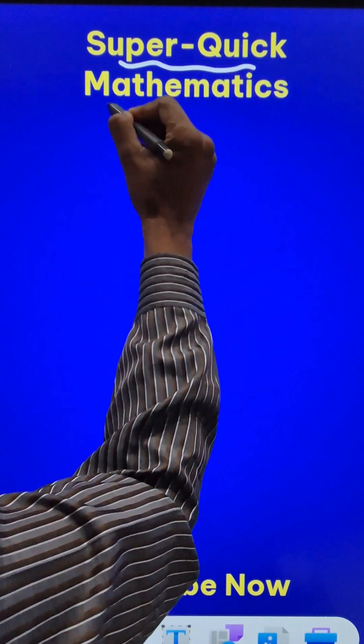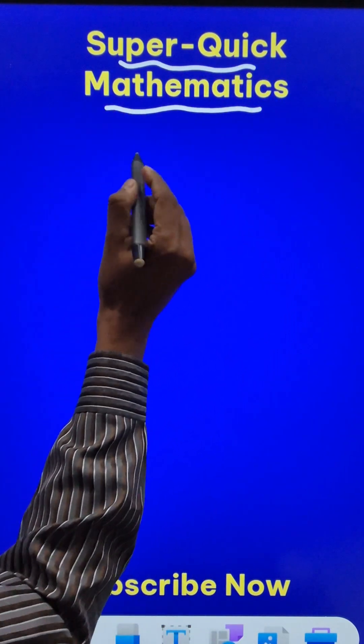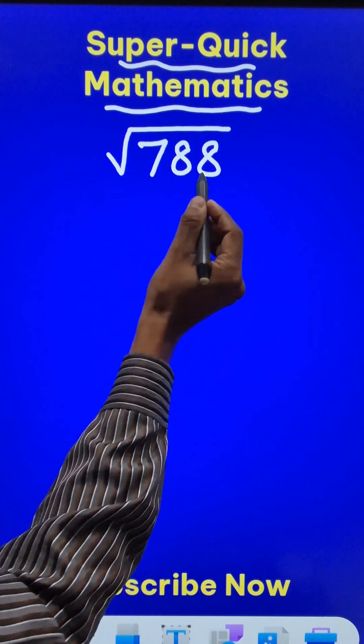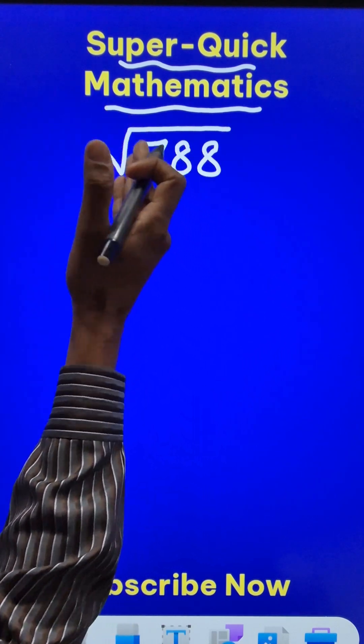Here is another example of super quick mathematics and this time I am going to find the square root of 788 which is a non-perfect square number using this trick.